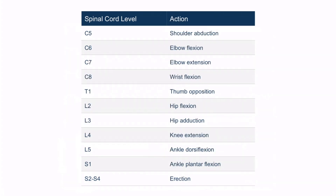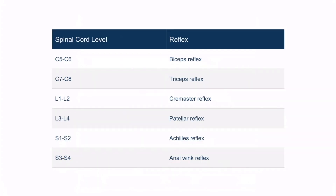This is a table of the spinal cord levels and their associated myotomes. L4 is associated with knee extension, L5 with ankle dorsiflexion, S1 with ankle plantarflexion, and S2 through S4 with obtaining an erection. This is also a table of the spinal cord levels and their associated clinical reflexes: L3 through L4 with the patellar reflex, S1 through S2 with the Achilles reflex, and S3 through S4 with the anal wink reflex.